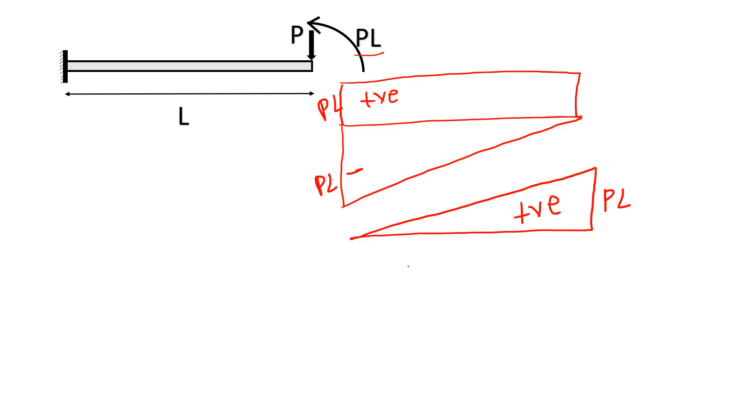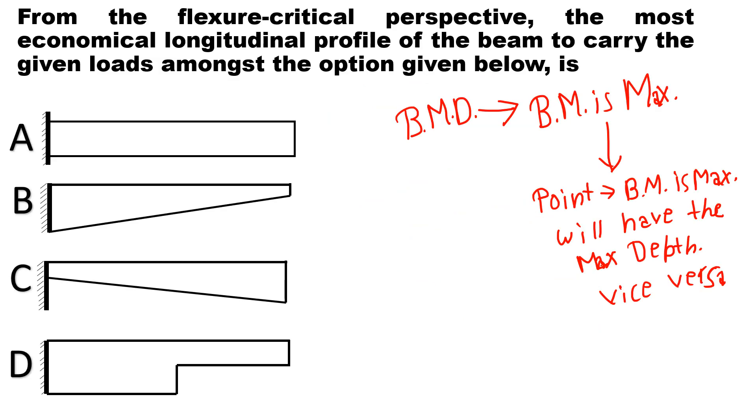As we can see from the bending moment diagram, the maximum bending moment is at the free end, so depth should be more at the free end as compared to the depth at the fixed end. Therefore, the most economical longitudinal profile for the given condition should look something like this, which is option C. Hence, option C is correct. Thank you.